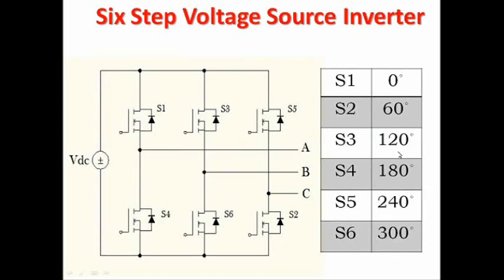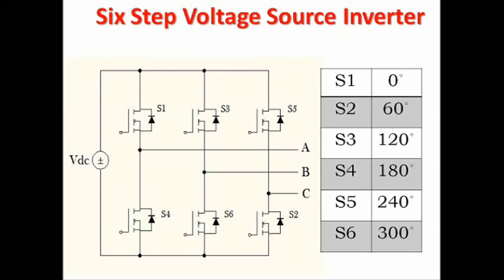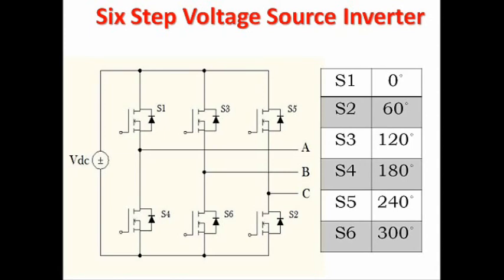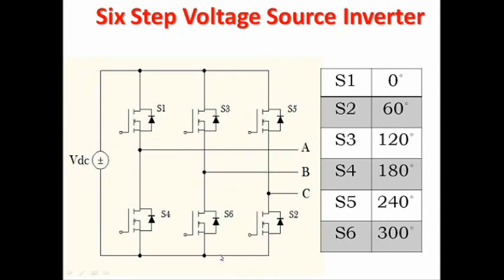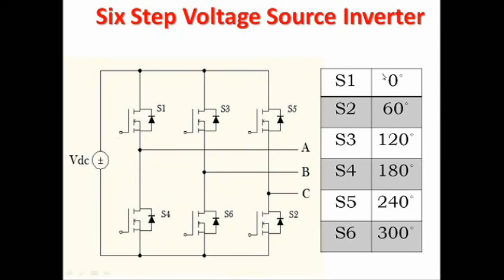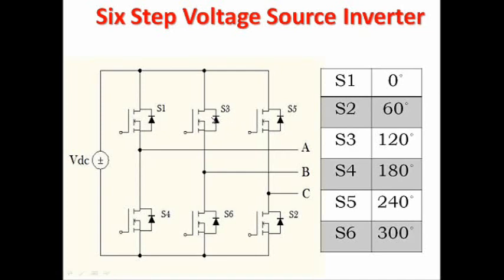From the table, each switch is switched on with a phase interval of 60°. Another important observation: the upper MOSFET and the lower MOSFET of the same phase leg have a phase difference of 180°. For example, S1 and S4 form the first upper-lower MOSFET set — S1 switches on at 0° and S4 at 180°, giving a 180° phase difference. Similarly, S3 and S6 also have a 180° phase difference.